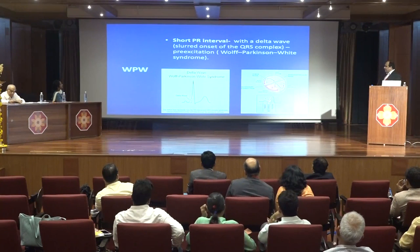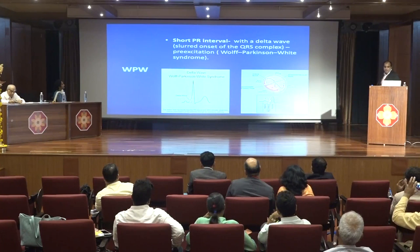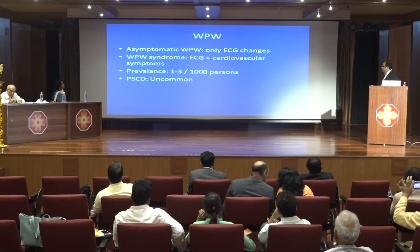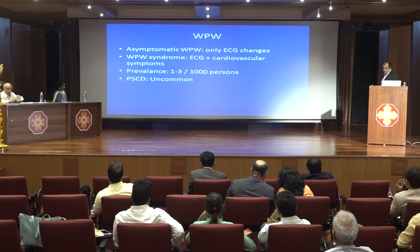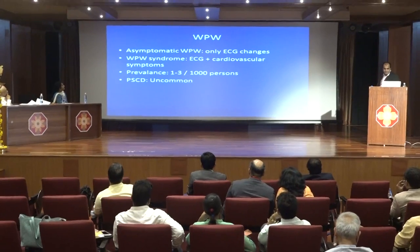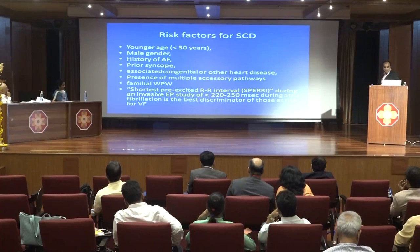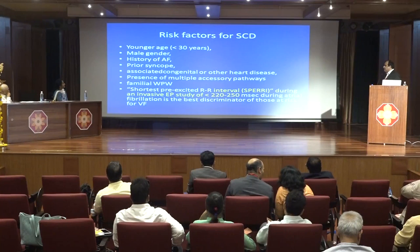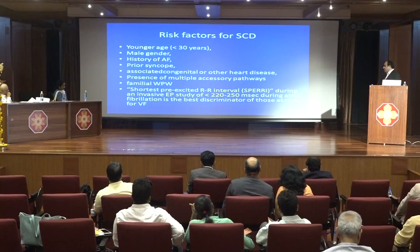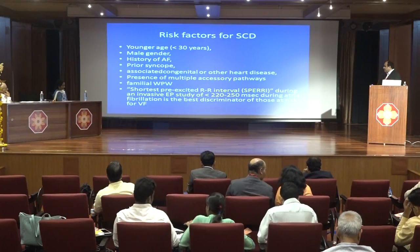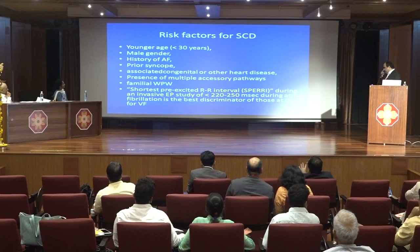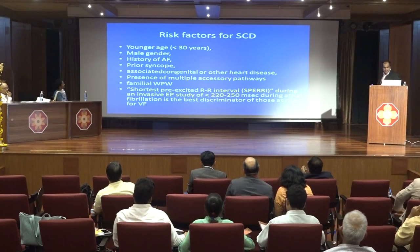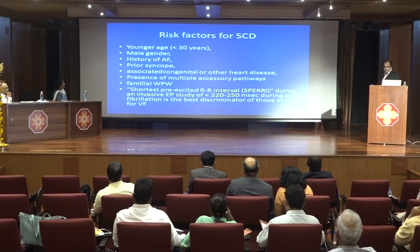WPW syndrome: although sudden death is not very common, WPW is diagnosed with a short PR interval and pre-excitation with delta waves. Prevalence is 1 to 3 per thousand persons. Risk factors for sudden cardiac death include younger age at presentation (under 30 years), male sex, history of AF, prior syncope, associated congenital heart disease, or multiple accessory pathways. The shortest pre-excited RR interval during invasive EP study — if less than 220 to 250 milliseconds during atrial fibrillation — is the best discriminator for risk of ventricular fibrillation.